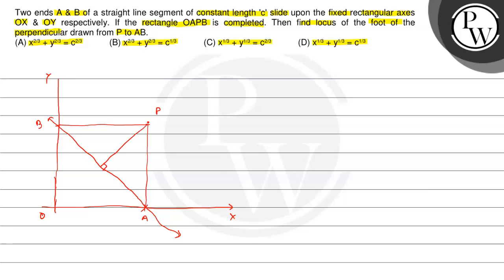Let us take the coordinates: point A is (a, 0) and point B is (0, b). Students, A and B are variable points because the rod is sliding. As it slides, the position can vary — it can be this position, or this position, or this position. So both A and B vary, with AB representing the x and y intercepts.